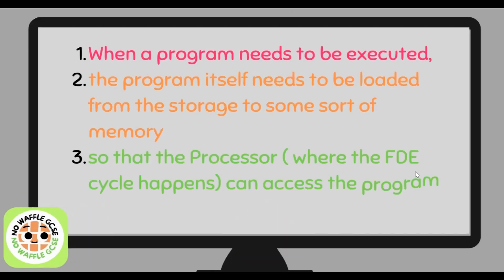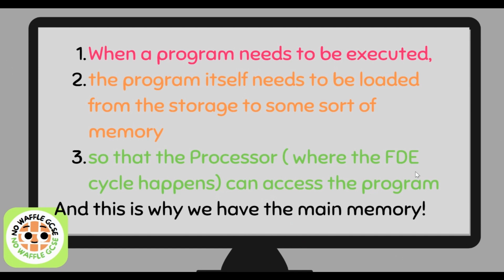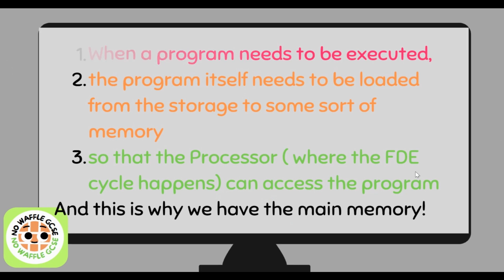When a program needs to be executed, the program itself needs to be loaded from the storage to some sort of memory. This is so that the processor, which is where the FDE cycle happens, can then access that program and do whatever the user wants it to do. This is why we have the main memory — it acts as an in-between between the processor and the storage, giving the processor access to things in storage for a temporary amount of time.